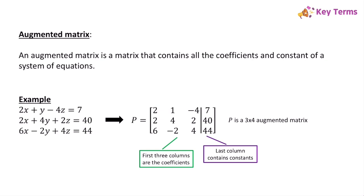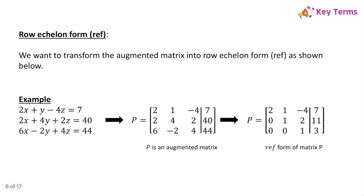Notice that P, which is our augmented matrix, is a 3x4 matrix. What we're going to do is take this augmented matrix and transform it into row echelon form, also abbreviated as REF.